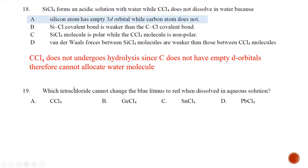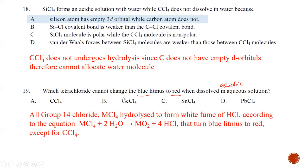Question number nineteen: which tetrachloride cannot change blue litmus to red when dissolved in solution? Blue to red indicates an acidic solution, so in other words, which tetrachloride cannot undergo hydrolysis to form an acidic solution? This is similar to the previous question — it is CCl4 that cannot undergo hydrolysis. We are looking for the one that cannot, so the answer is A.